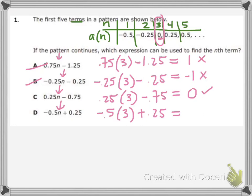So I'm now certain that C is the answer. If I wanted to be absolutely sure, I could go back to other inputs — put 1 where n is and check for negative 0.5, or put 2 and check for negative 0.25 — just to verify.